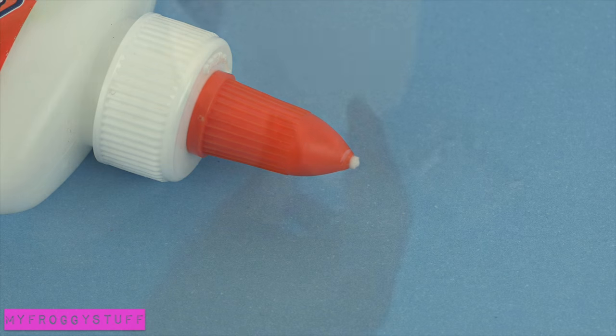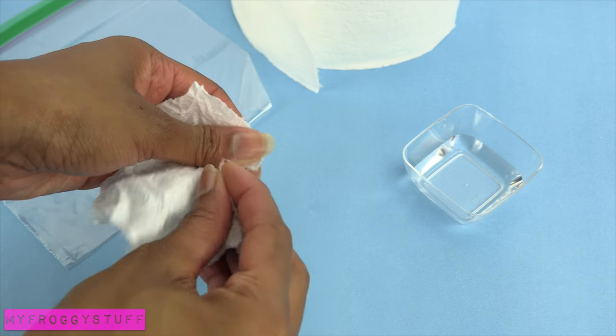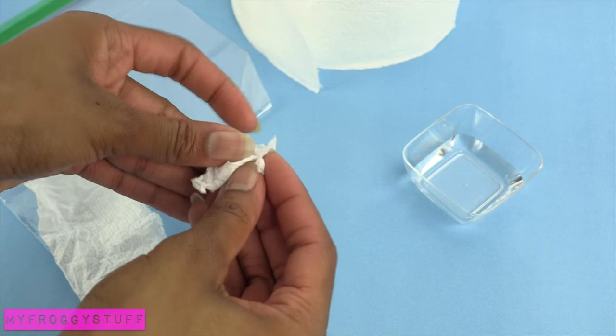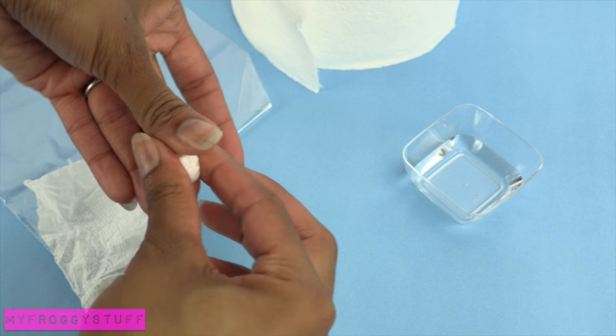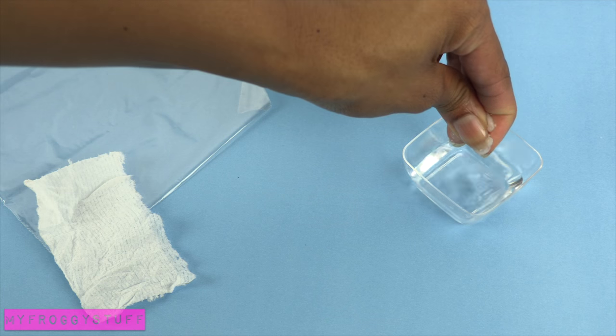I start by taking a small piece of toilet paper. I tear off just enough to make a ball, which is going to be the top of the bun. Dip it into the water and squeeze off the excess.